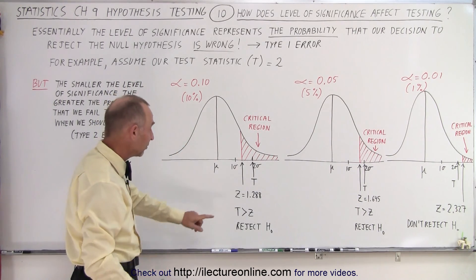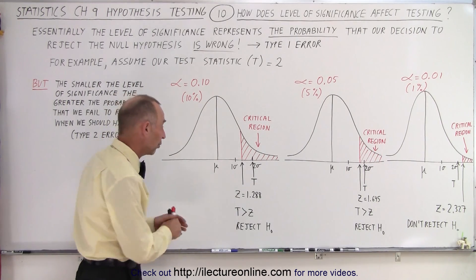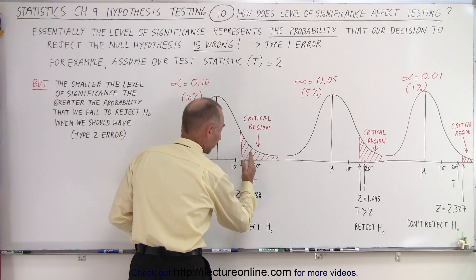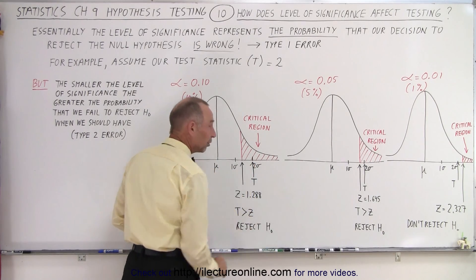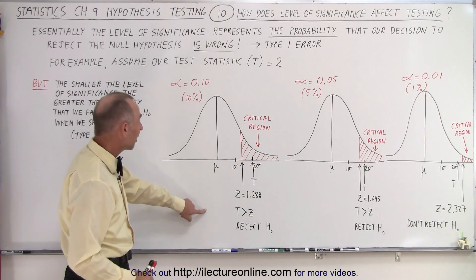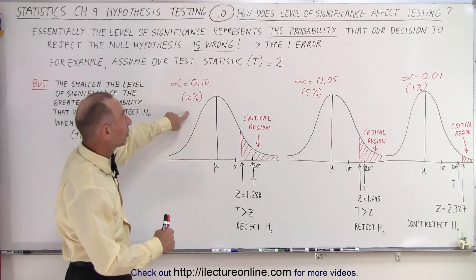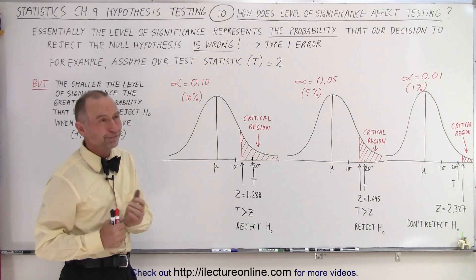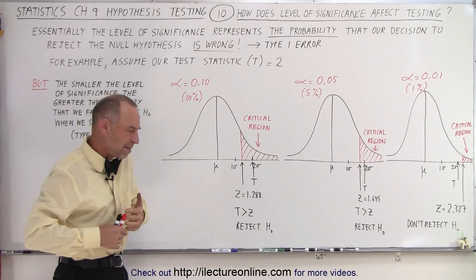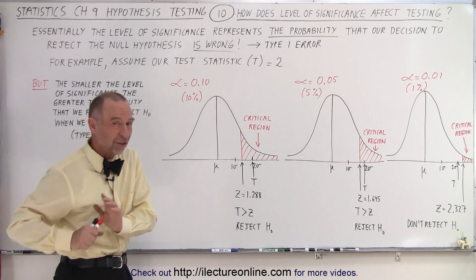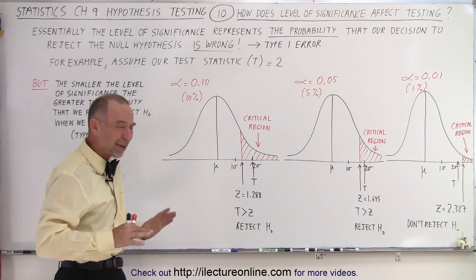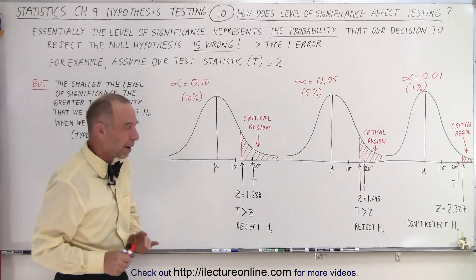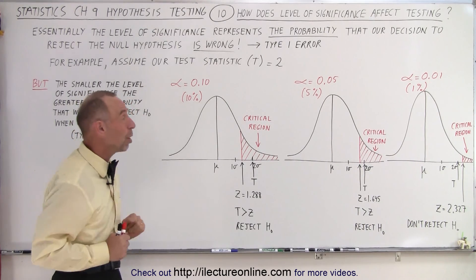When T is larger than z, so when the test statistic falls within the critical region, then we reject the null hypothesis. In this case, the probability that our decision is wrong is 10%. Can you live with that? There's a 10% chance that your decision was wrong. Maybe I can't live with that, that's too much of a probability, I want to make it smaller.